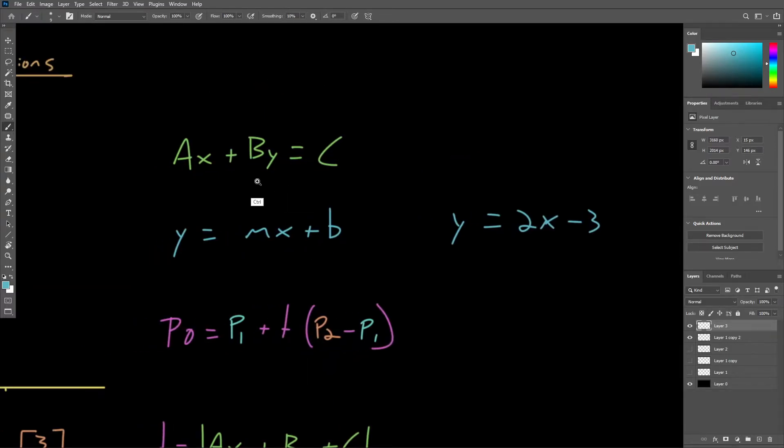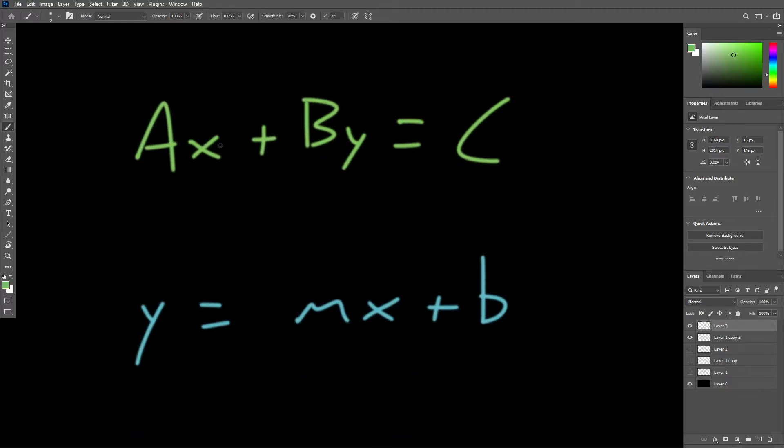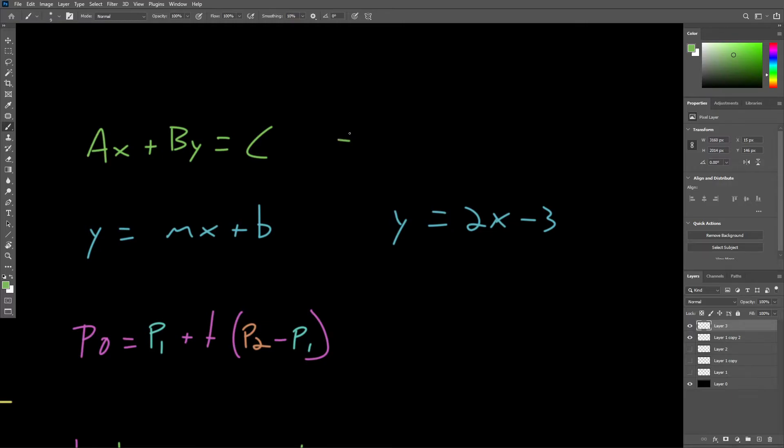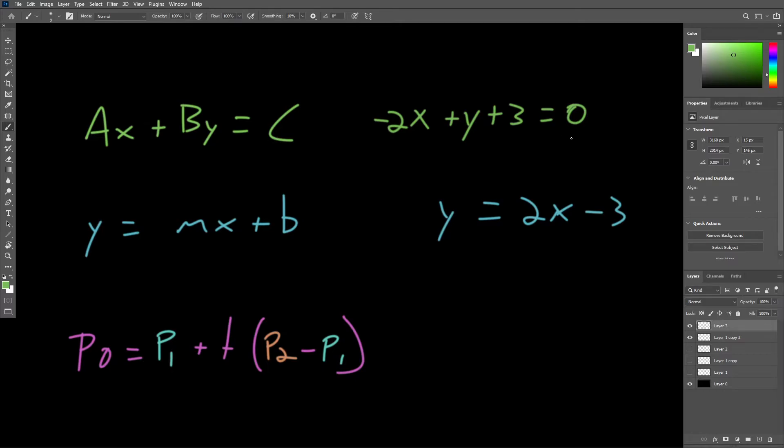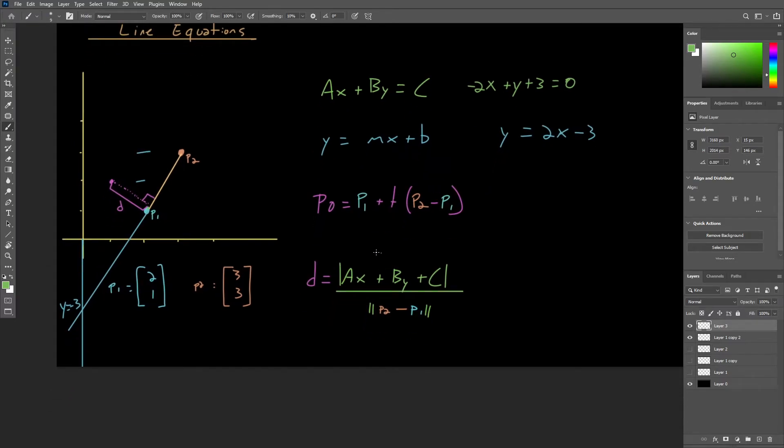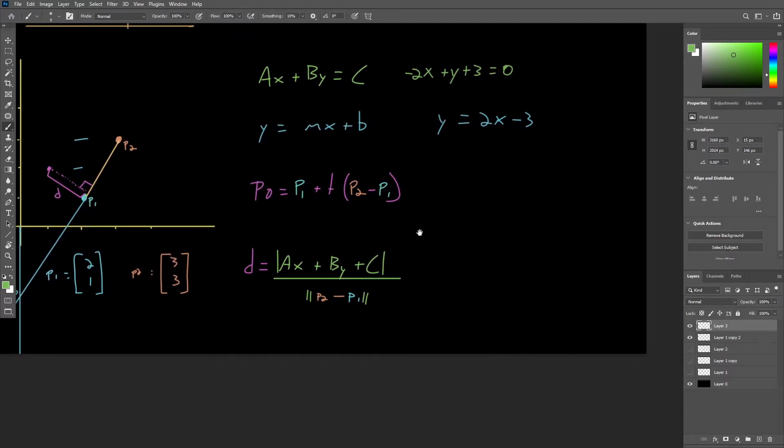Now, rearranging this to the standard form of the line, we obtain negative 2X plus Y plus 3 equals 0. Let's put C on the left side of the equation, setting it to 0, giving us the proper rearrangement for use in this equation.